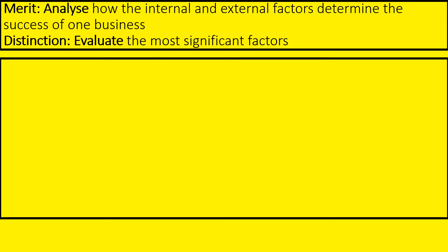In this section, we're going to be looking for two criteria. There's a merit, in which we analyse how the internal and external factors determine the success of one business, and a distinction, in which we evaluate which we think are the most significant factors. In the past section, you looked at two businesses. Now, we just pick one. Pick one you know the most about — it's so much easier.